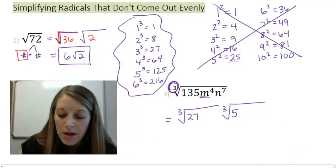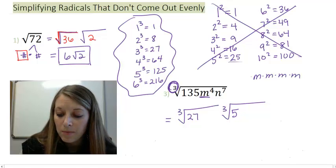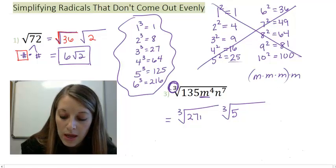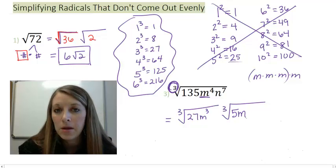Alright, now my variables. Let's talk about m to the 4th. I have 4 of these m's. But I want to pull out groupings of 3 of them. So if I look, I can pull out 3 of these m's. Or m cubed. Which means I have 1 m left over.